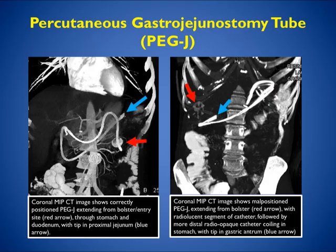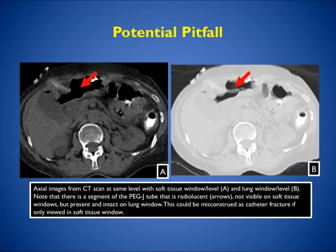Here's a good example of a percutaneous gastrojejunostomy tube, the PEG-J. The coronal MIP shows the PEG-J extending from the bolster entry site through the stomach and duodenum with the tip in the proximal jejunum, indicated by the blue arrow. The coronal images also show a malpositioned PEG, extending from the red arrow with a radiolucent segment of catheter followed by a more distal radiopaque catheter coiling in the stomach with the tip in the gastric antrum. With a PEG-J, you need to follow it through the stomach, through the duodenum, and down into the jejunum — if it's not there, it's incorrectly placed.